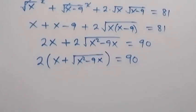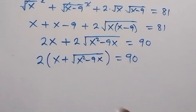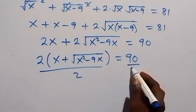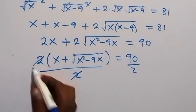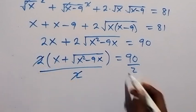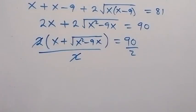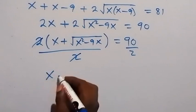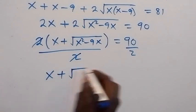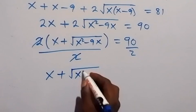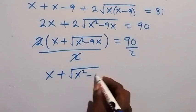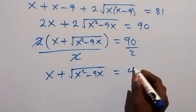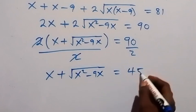We divide both sides by 2. 90 divided by 2 is 45, so we have x plus root of x squared minus 9x equals 45.